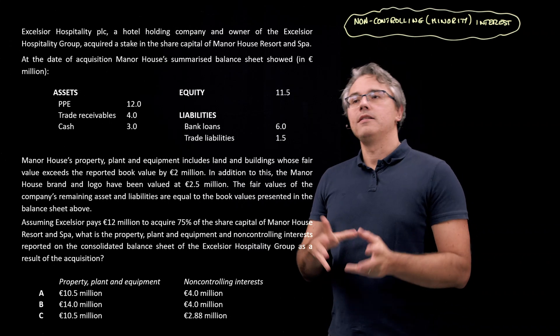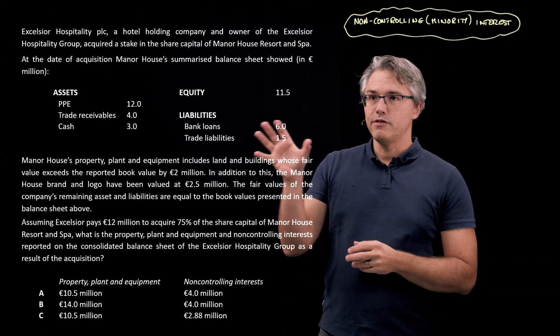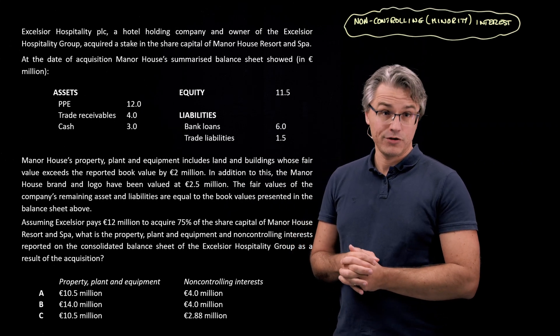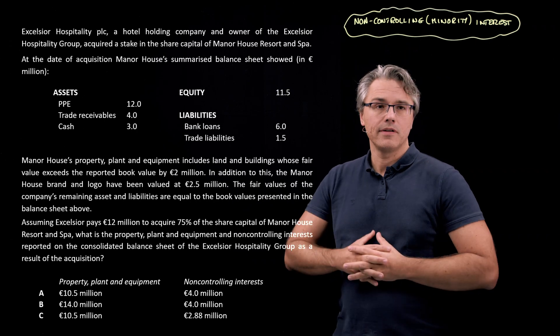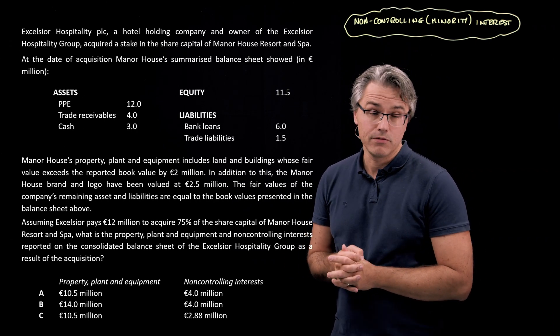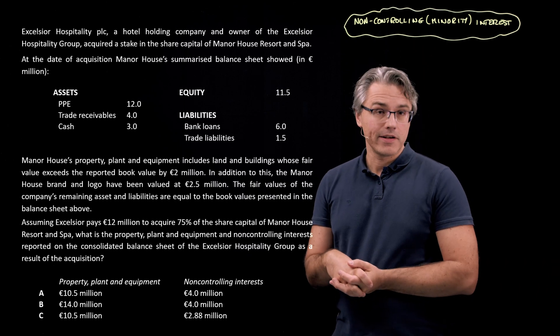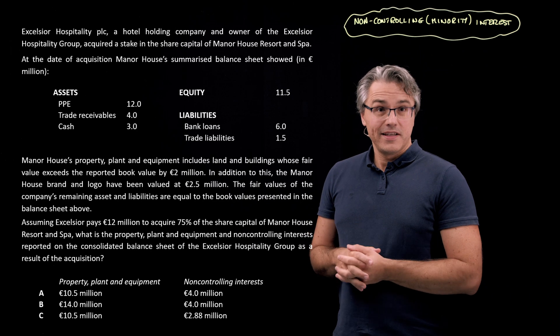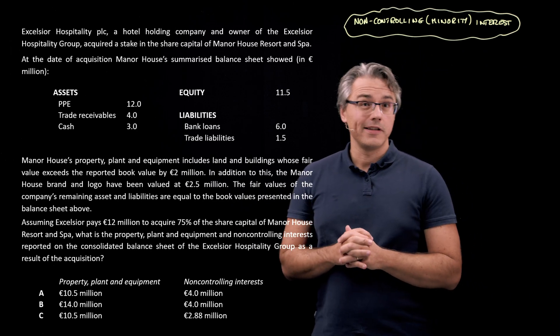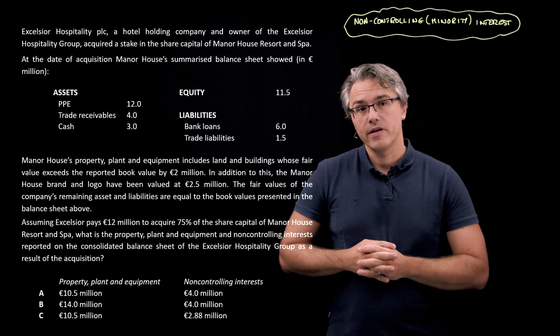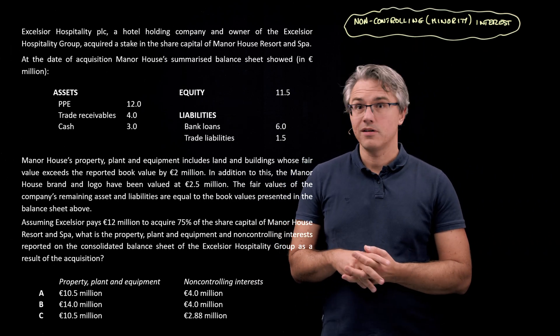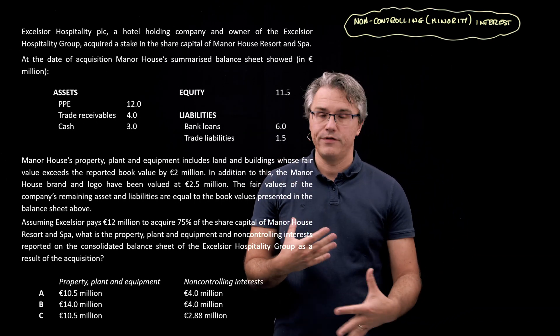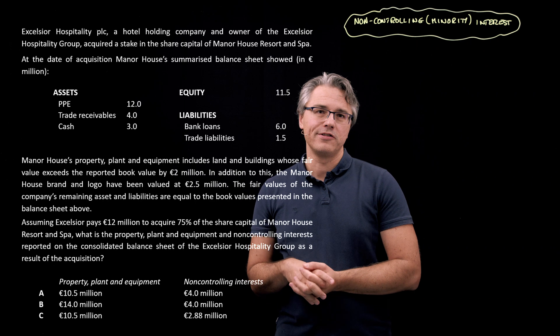We've got the same scenario as in the previous videos. We've got Excelsior Hospitality acquiring Manor House and we've got Manor House's balance sheet. We've got some info on adjustments that need to be made so as to arrive at the fair values or market values of Manor House's various assets.